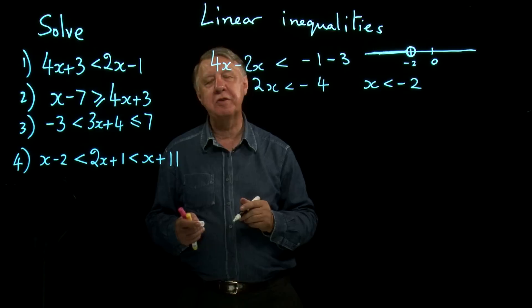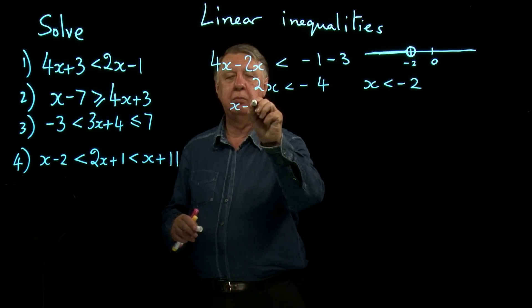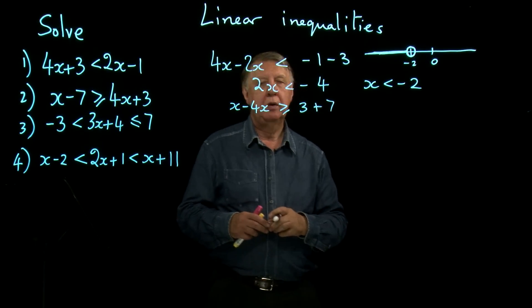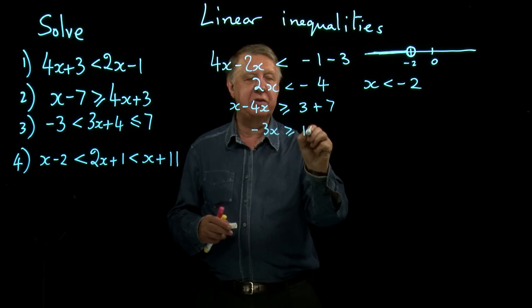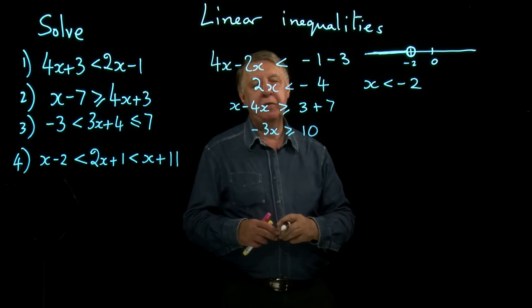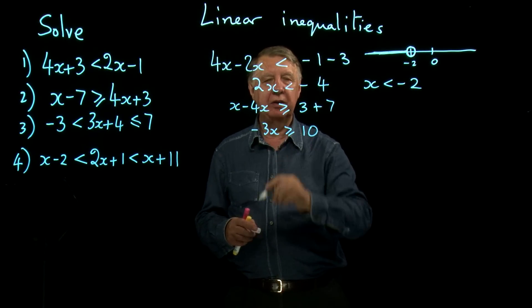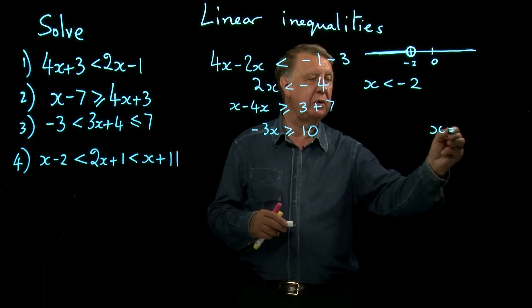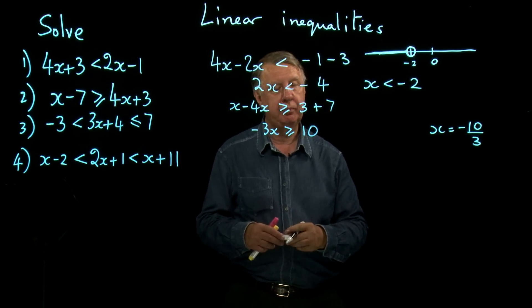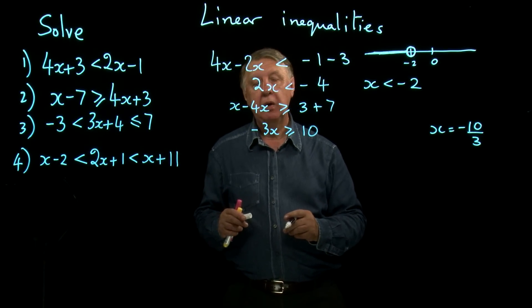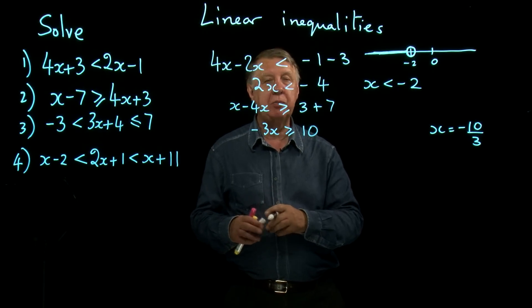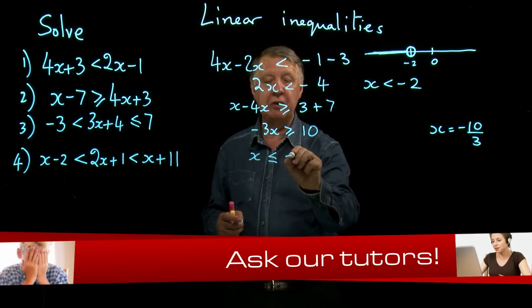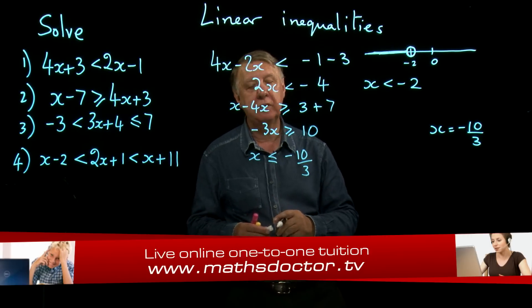The second one, supposing you tried to do the same thing. So we'll take 4x from each side and we'll then add 7 to each side. So we get negative 3x greater than or equal to 10. Now at this point, you have to be really careful. We're dividing by negative 3. Now if this was an ordinary equation, there'd be no problem. You'd write down x equals negative 10 over 3. It isn't, it involves an inequality sign. And when you divide an inequality sign by a negative number, you have to change the direction of it round. So if we divide this by negative 3, we have to change that round to x is less than or equal to negative 10 over 3.